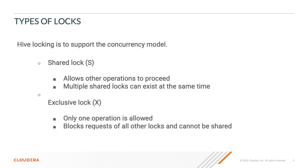The Hive locking mechanism is basically to support the concurrency model with respect to RDBMS architecture. This ensures Hive supports concurrent reads and writes at any given point of time. There are two types of lock modes: one is shared and the other is exclusive. Multiple shared locks can coexist at any given point of time, whereas an exclusive lock blocks all other locks.